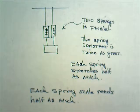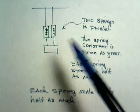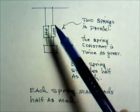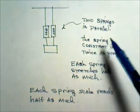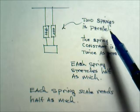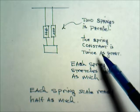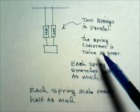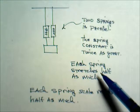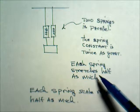Now suppose we replace the single spring with two springs. Both directed up and down. But now the two springs are in parallel. Therefore the spring constant is going to be twice as great as it was before. And each spring will then only stretch half as much.